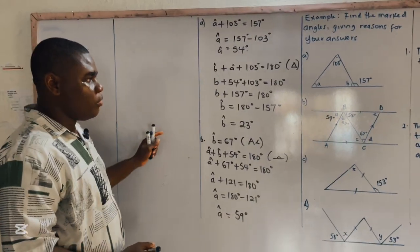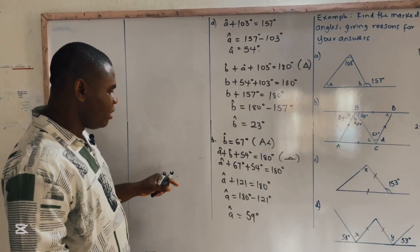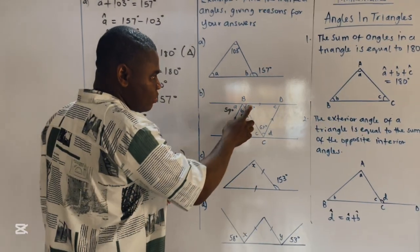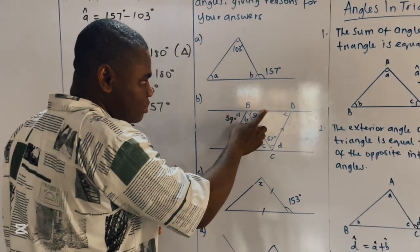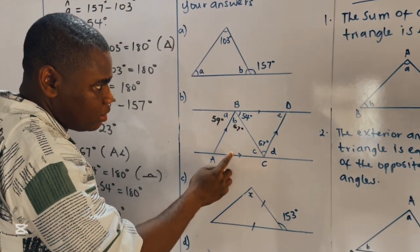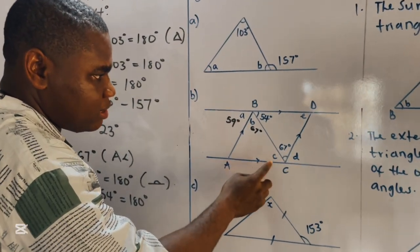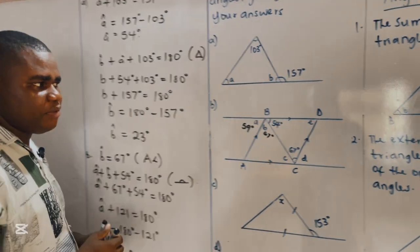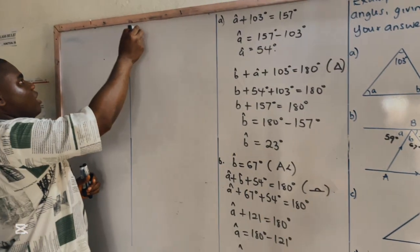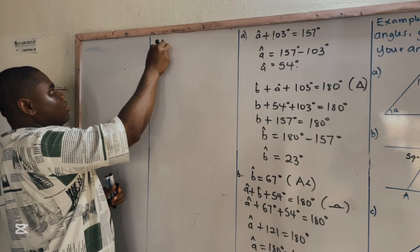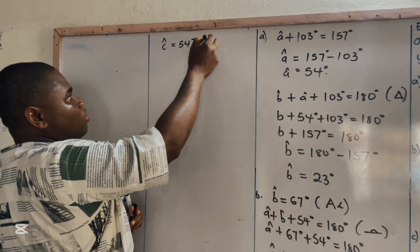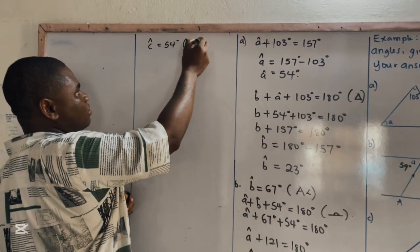We can also find C. There is another alternate angle here. It therefore means that C equals 54 degrees, so angle C is equal to 54 degrees — alternate angles are equal.